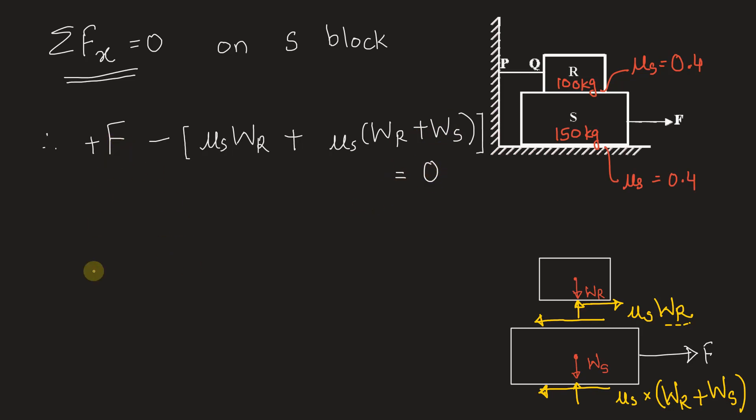Let's put the values and find out F. So we have F is equal to mu S into G. We can take out G because when we write weights we are going to multiply mass with G. So G we have taken out from both the terms. Mass of R is taken two times because it is adding. So we will have two times mass of R plus mass of block S.